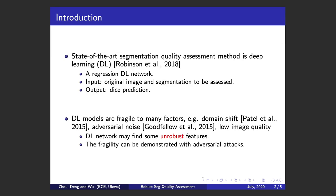The current state-of-the-art segmentation quality assessment method is a deep learning based method. It's basically a regression deep learning network, similar to AlexNet, where the input is the original input image and the segmentation to be assessed, and the output is the predicted dice score.